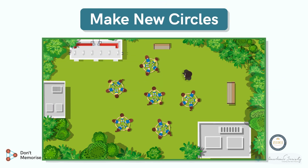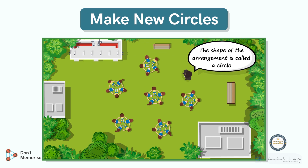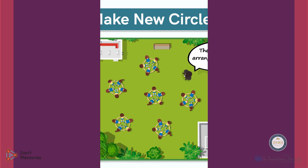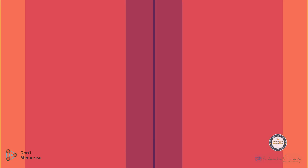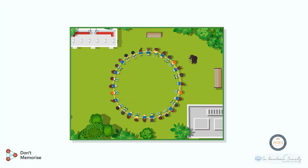Once the students have finished responding, we will inform them that the shape of the arrangement is called a circle. Now we will ask the students to form one big circle and instruct them to sit at their places.